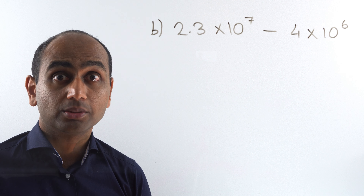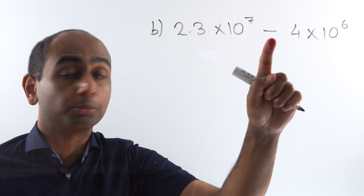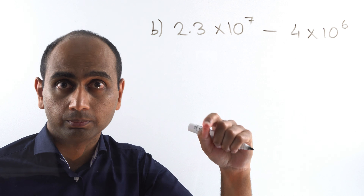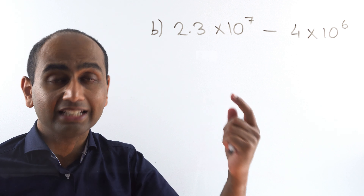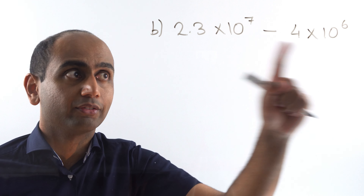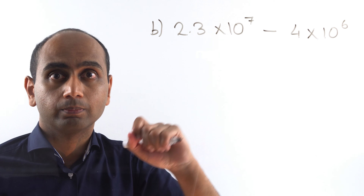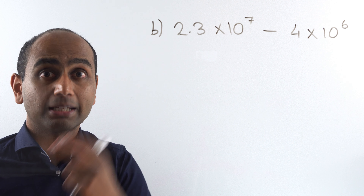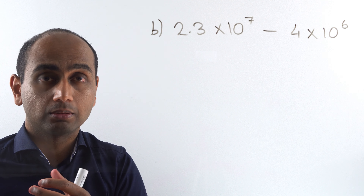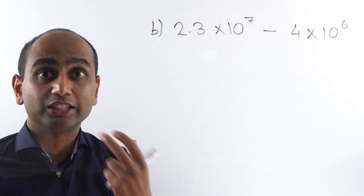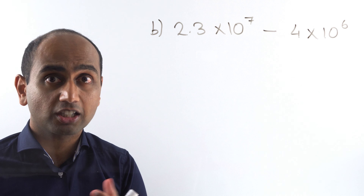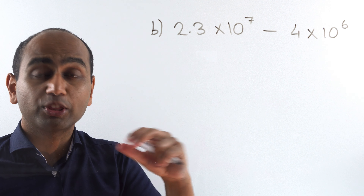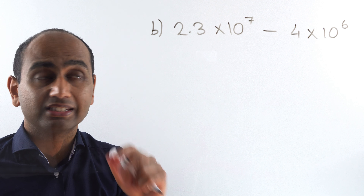Here's question B. This time I'm subtracting two numbers that are in standard form, and again I don't have the same power of 10. What I want to do is make sure they both have the same power of 10, so I need to rewrite one of them. Just like before, normally I want to keep the higher power the same.